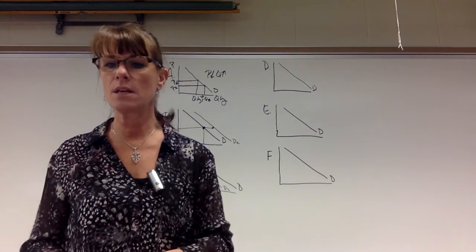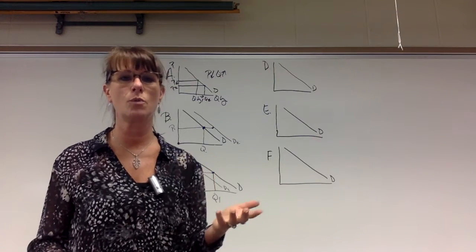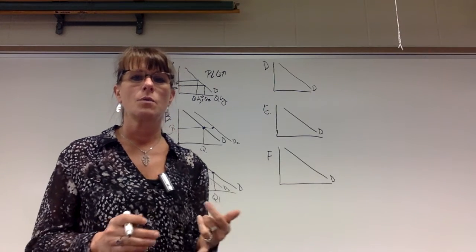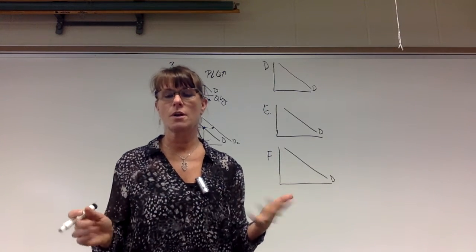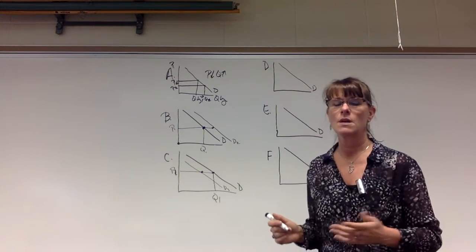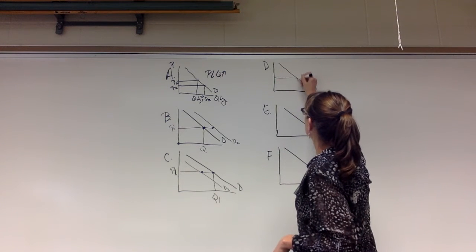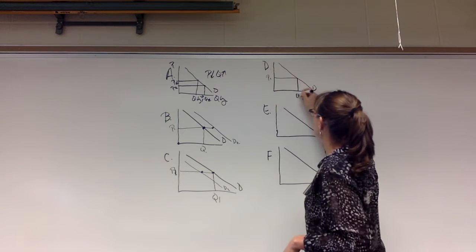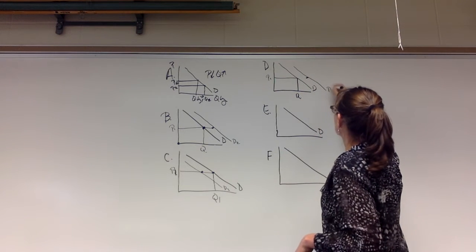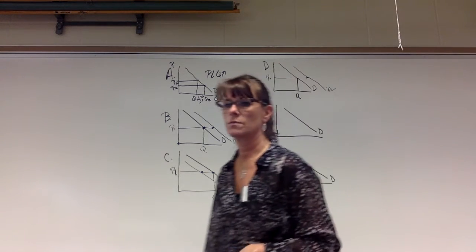Letter D, we have incomes increasing and we are going to assume that cell phones are a normal good. Unless I tell you otherwise or it's extremely obvious, we're going to assume that everything we talk about is a normal good because when your income goes up you typically want to buy some more stuff. So if incomes go up there's going to be an increase in the demand for cell phones. So if this is the price of the cell phone and we have more money at that price, we're going to have a purchasing of more cell phones, just going to increase, shift it to the right.